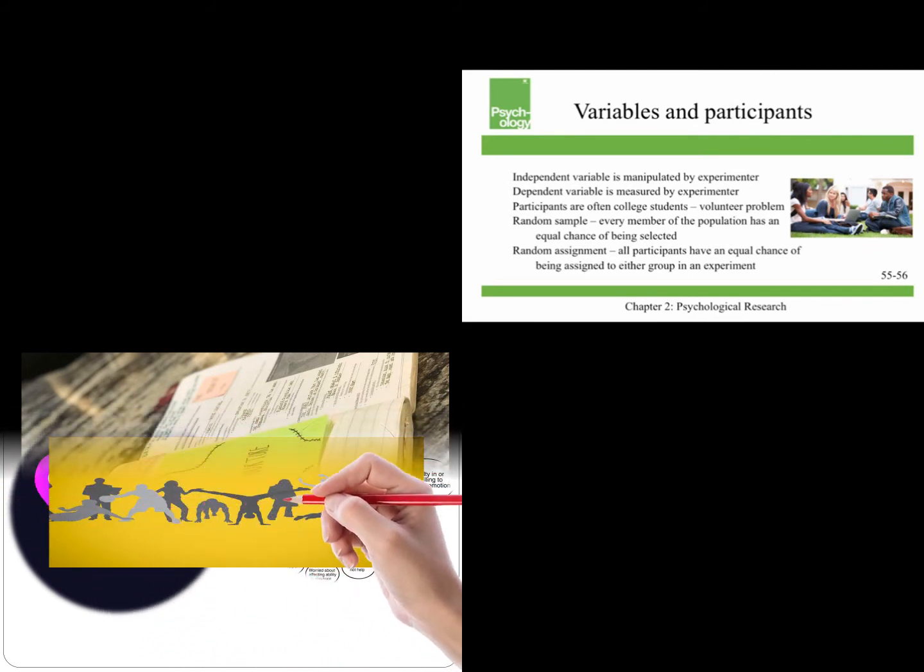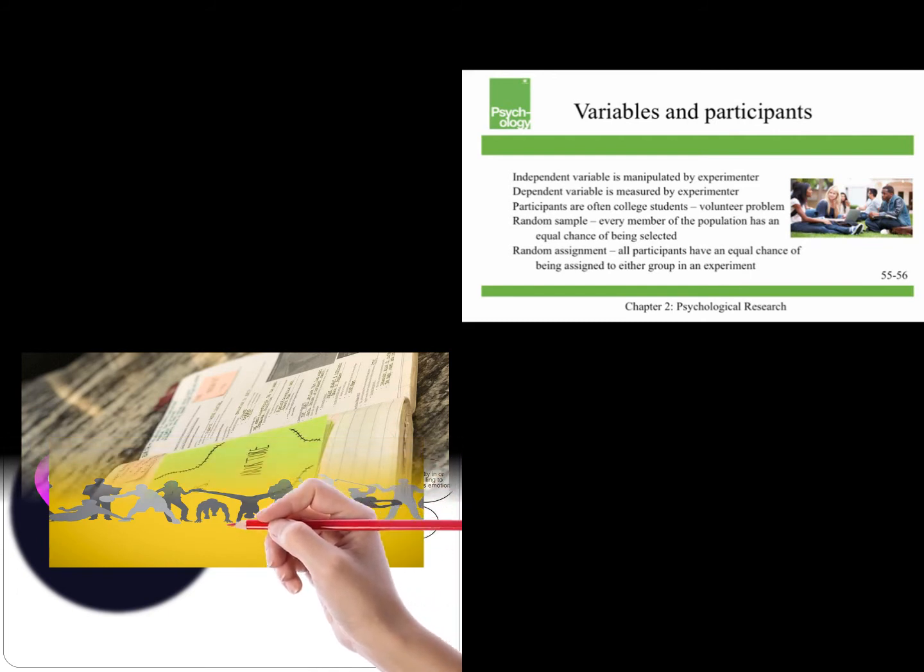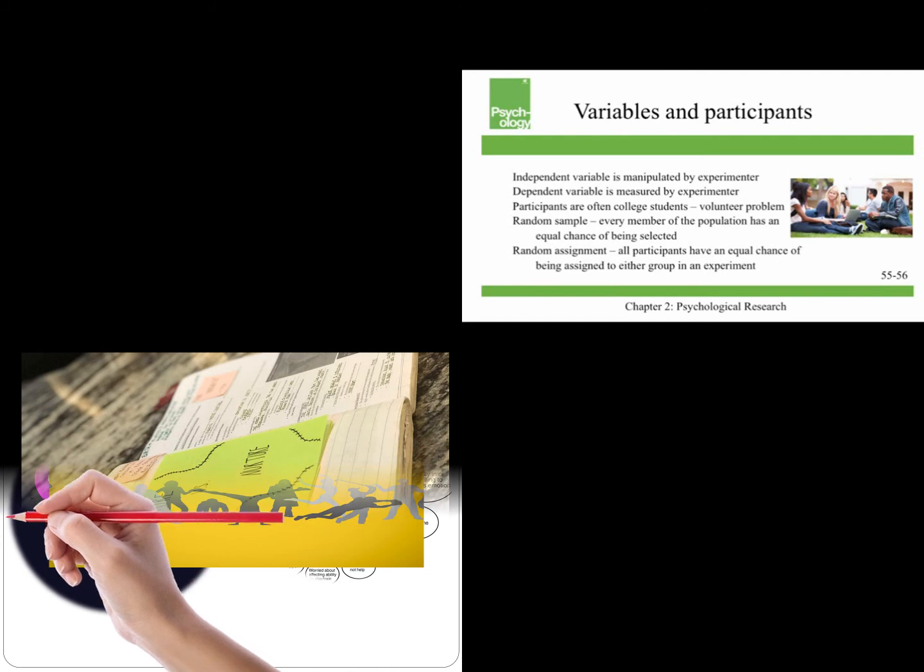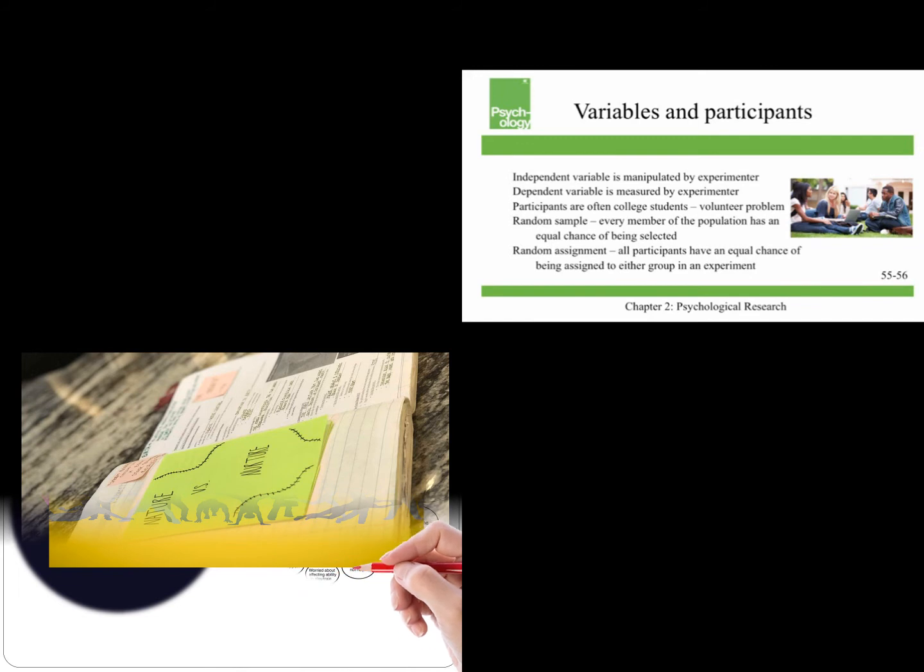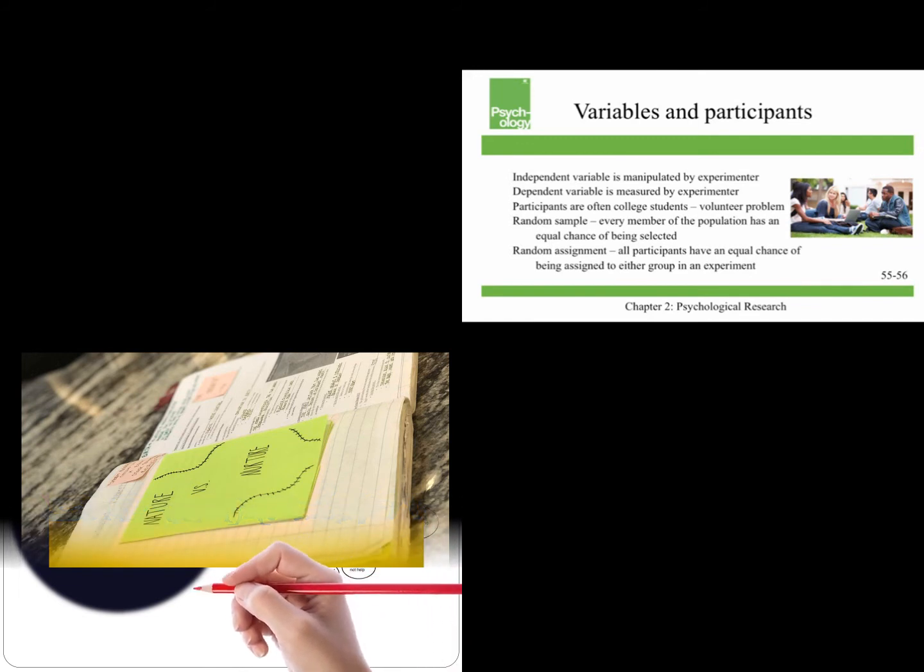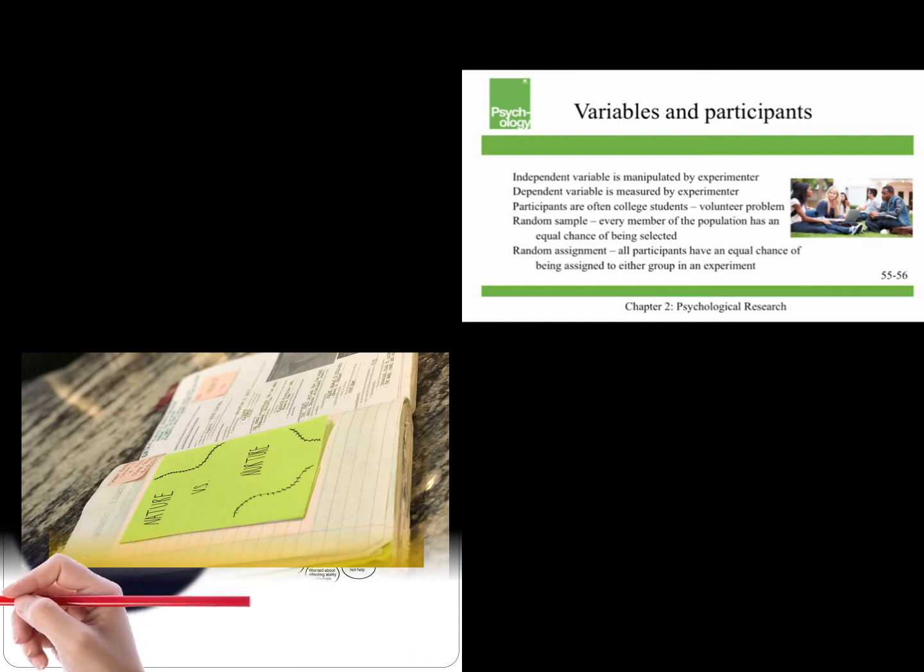Participants are often college students, and this leads to what's called the volunteer problem, because college students tend to be younger, more educated, more broad-minded, and less diverse than the general population. So again, this is an external validity issue.